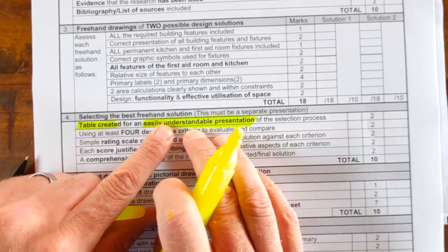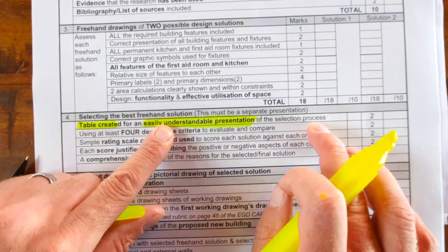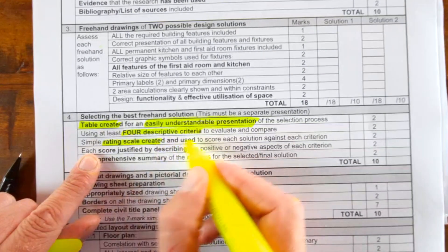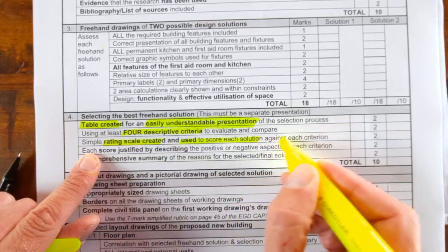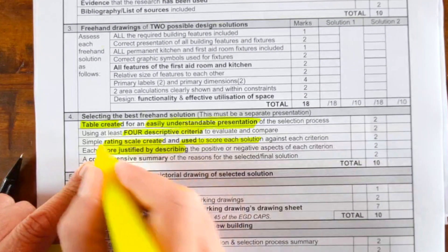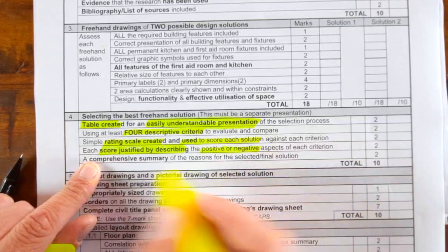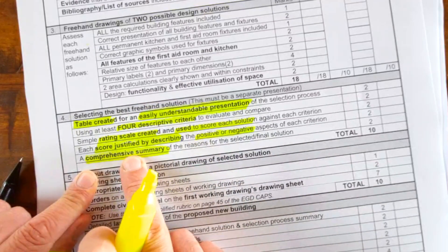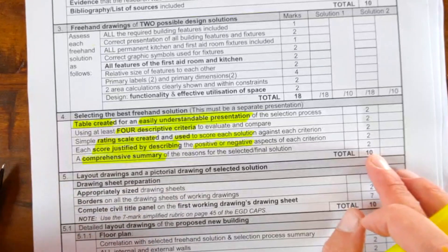So it must be clear. How did you do the process? You need to use four descriptive criteria. You have to have a rating scale that is used to score each solution against each criterion. Each score must be justified by describing the positives and negatives and a comprehensive summary. So if you meet these requirements, people, you're going to get 10 out of 10.